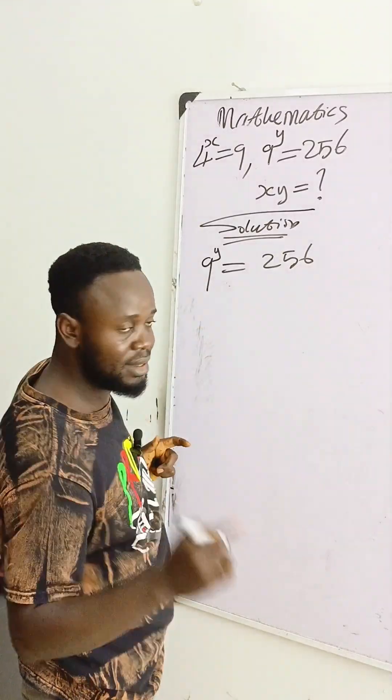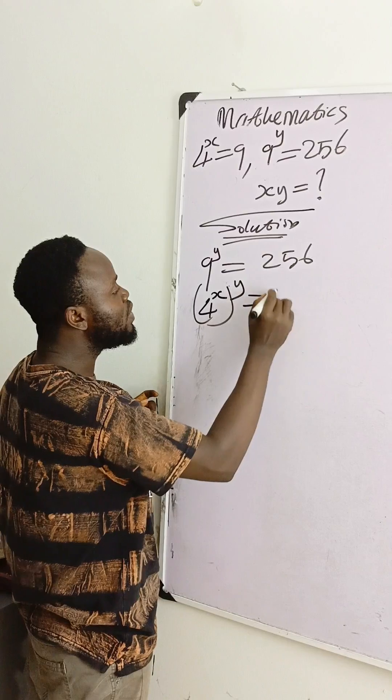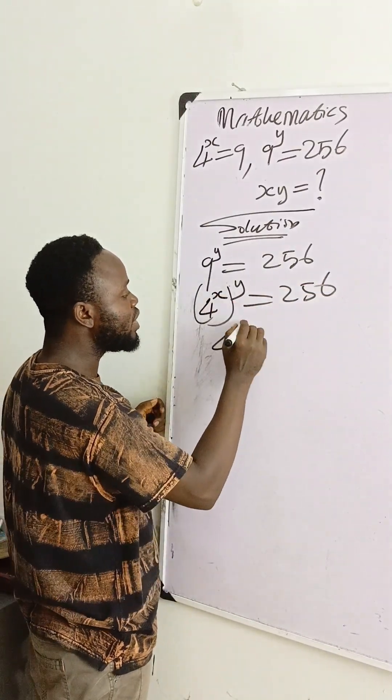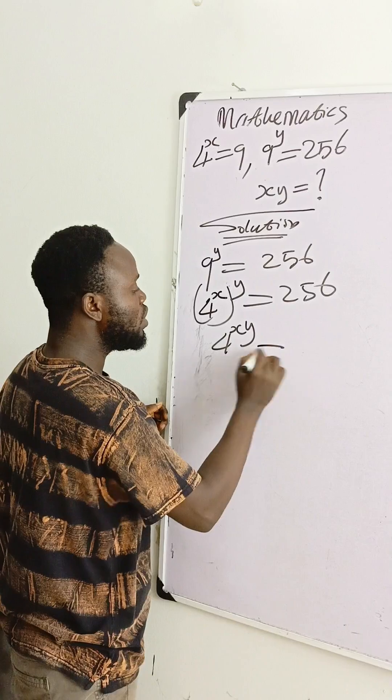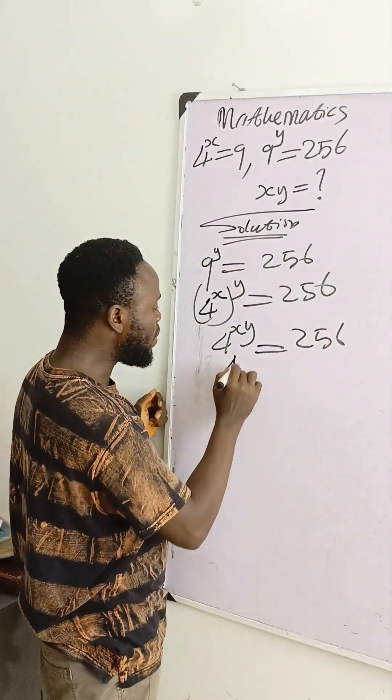Therefore, this 9 is 4 raised to power x, and it has power y. This is equal to 256. So 4 raised to power x times y is equal to 256.